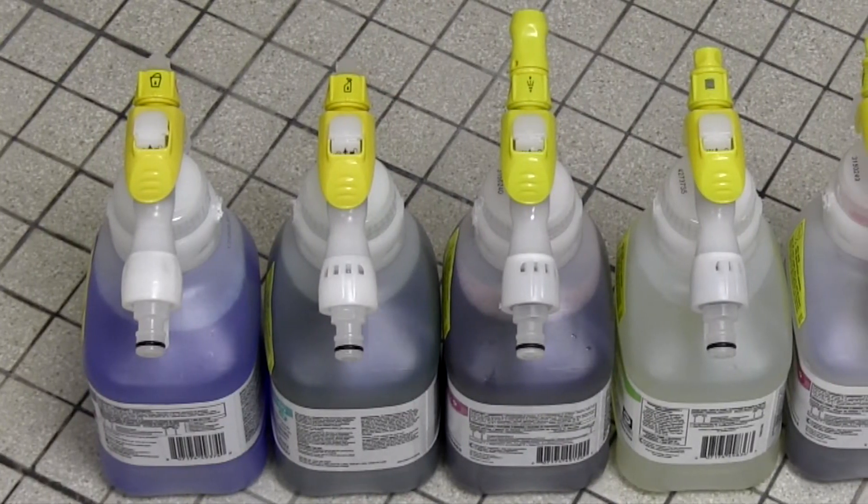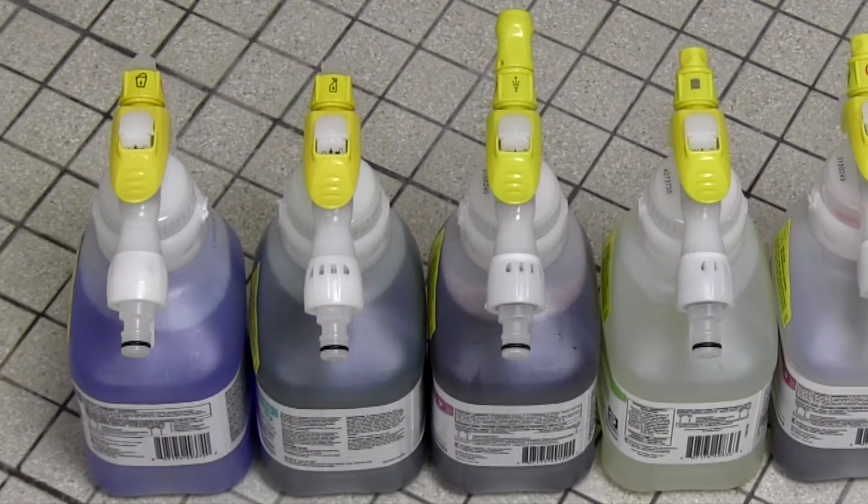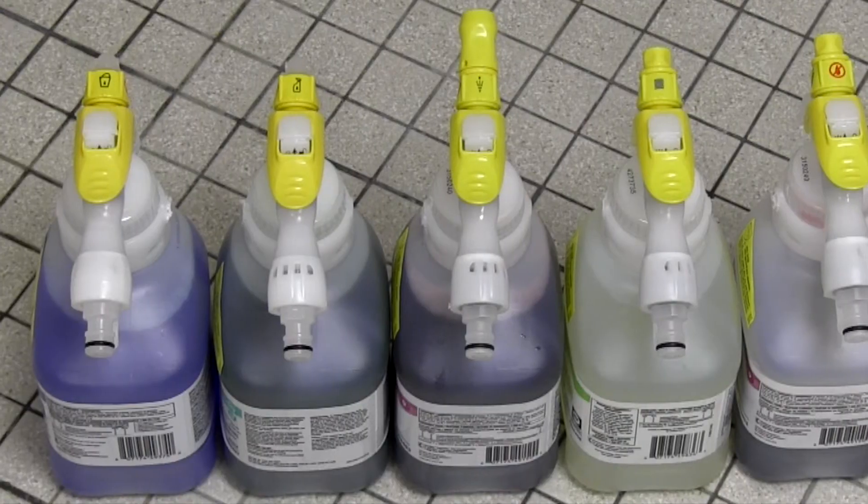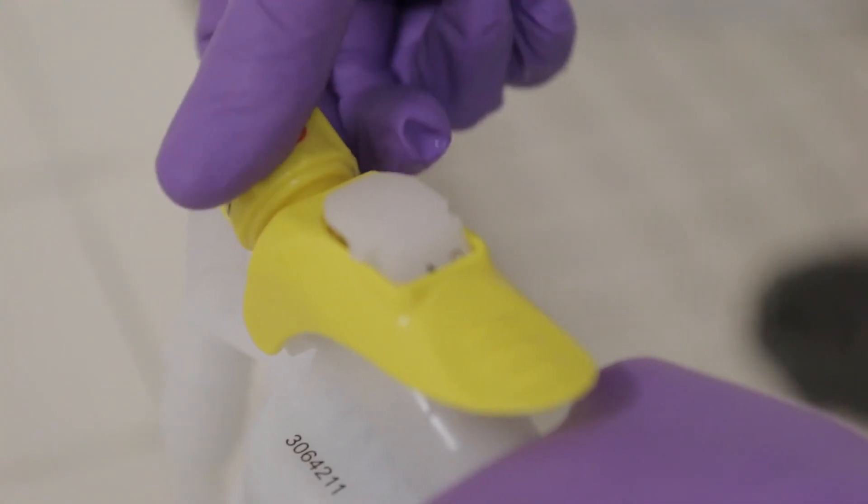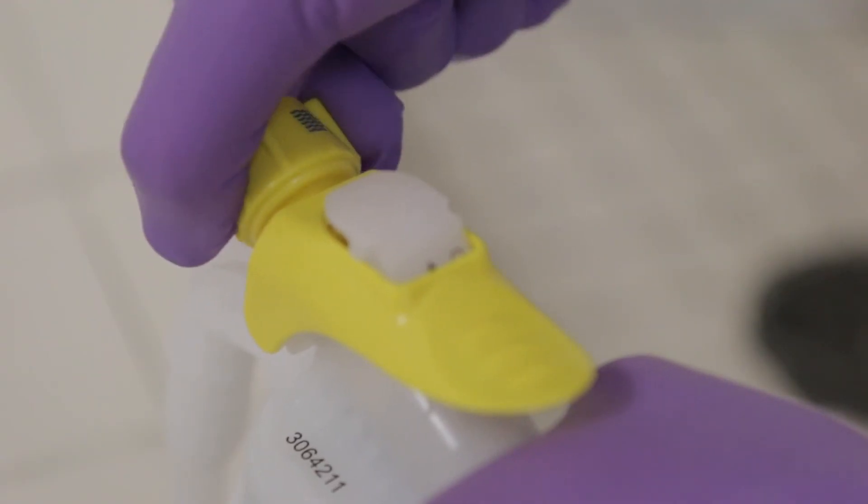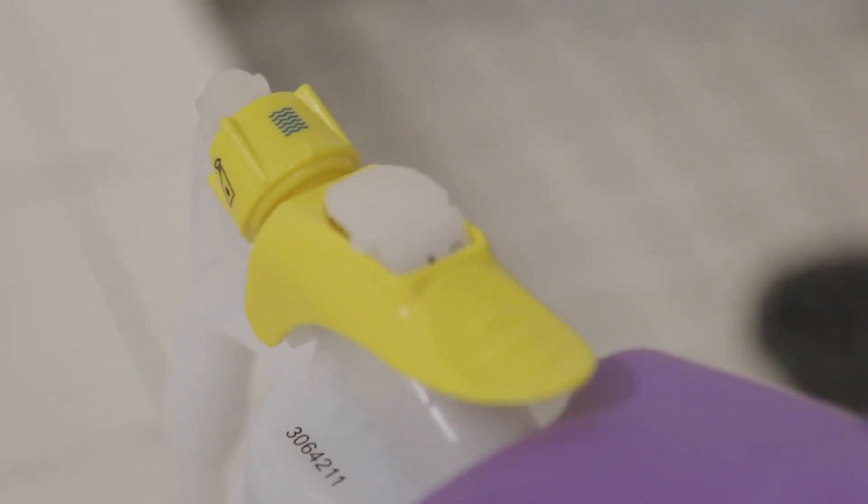Before filling your container, choose the proper setting on the yellow selector. The bucket icon indicates a faster flow rate for filling buckets or auto scrubbers. The bottle icon indicates a slower fill rate for filling spray bottles. The blue waves indicate water only, no chemical.